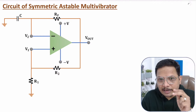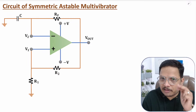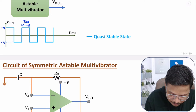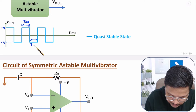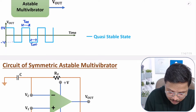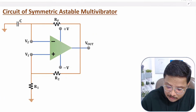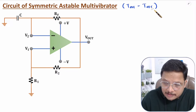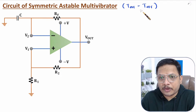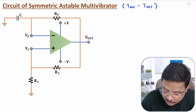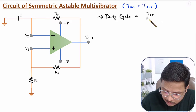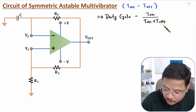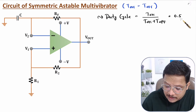What is the meaning of symmetric? Symmetric means T-on and T-off time periods are equal. The plus V voltage region is the T-on time period, and the minus V voltage region is the T-off time period. For a symmetric astable multivibrator, T-on equals T-off. Based on this, the duty cycle is half, or 50%. Duty cycle equals T-on divided by (T-on plus T-off). If T-on equals T-off, duty cycle is 1/2, or 50%.